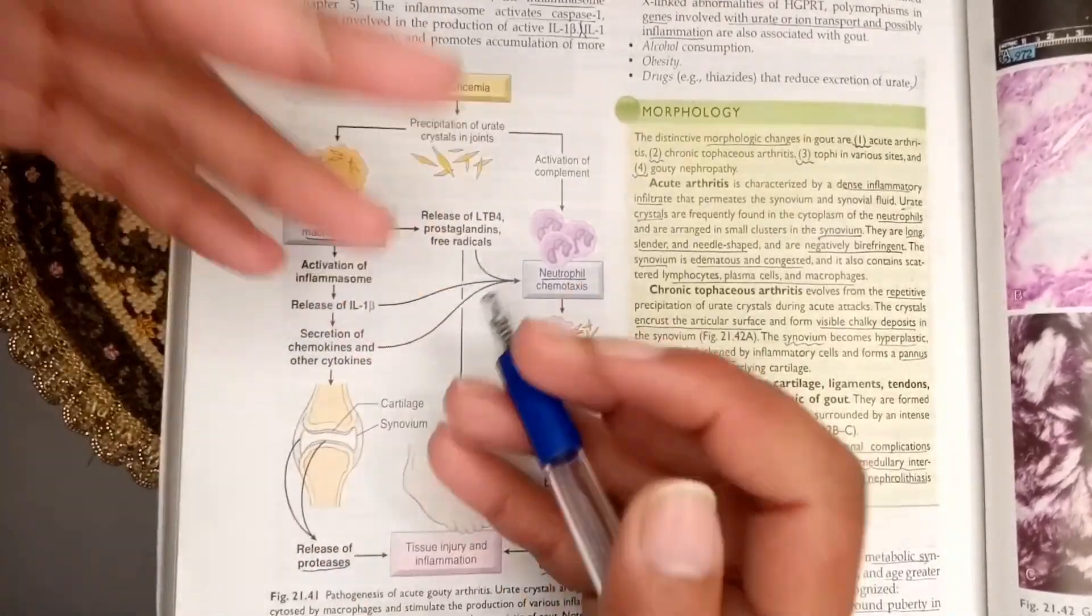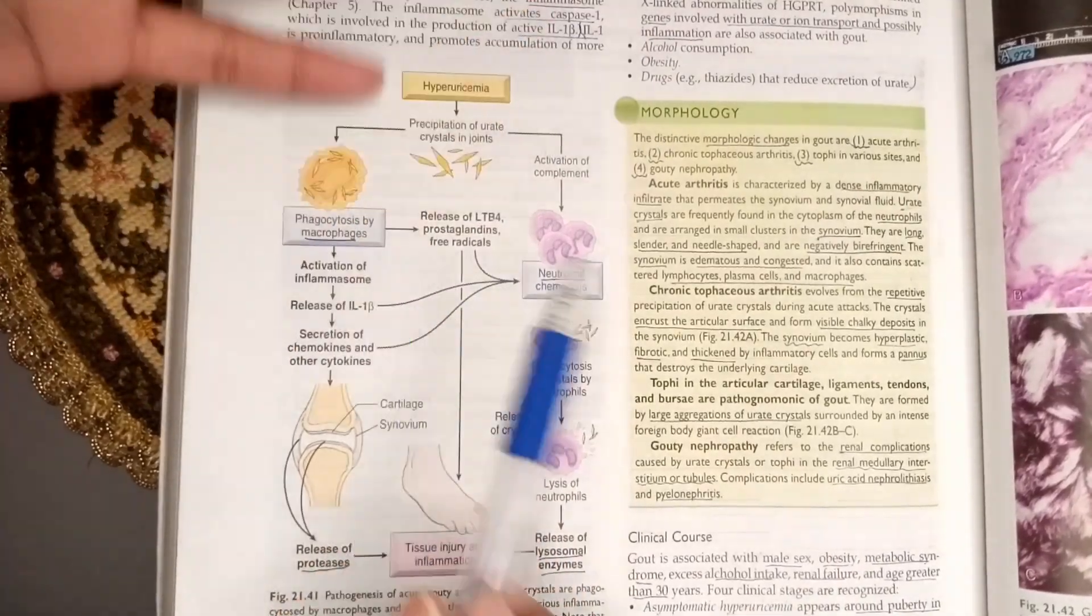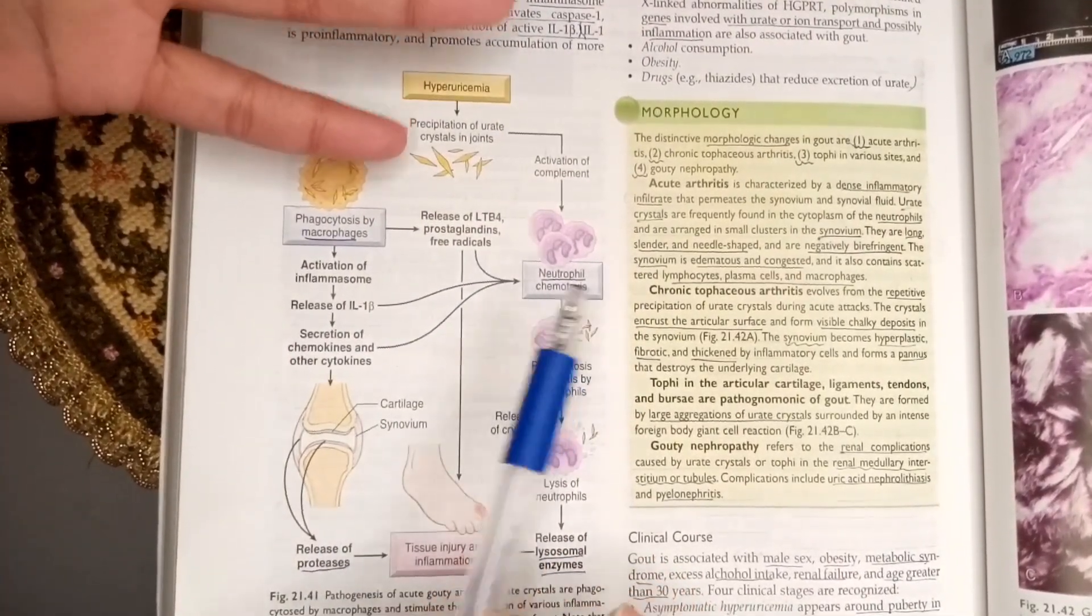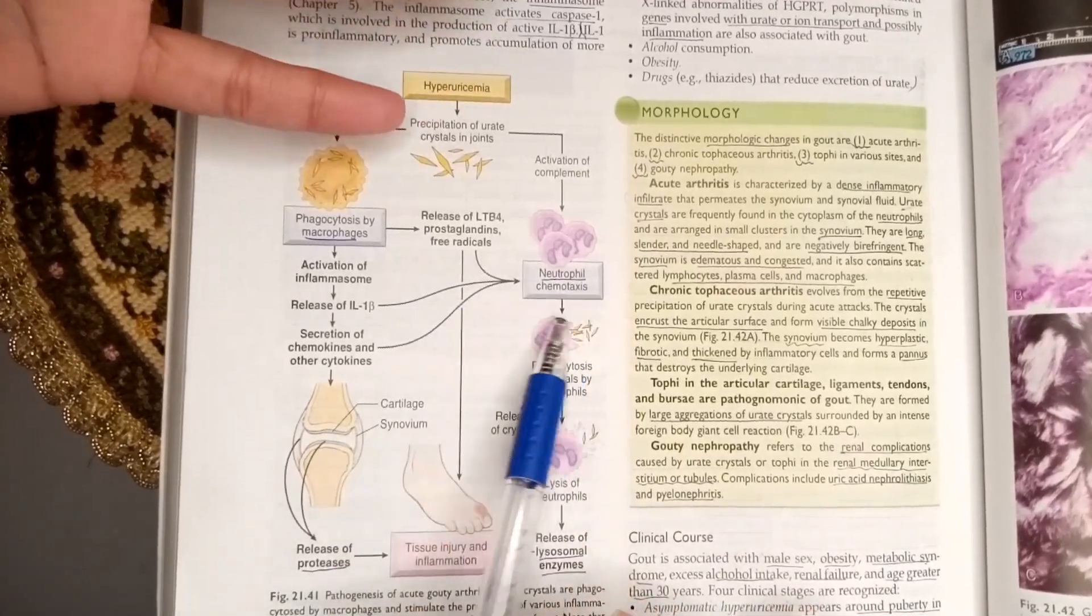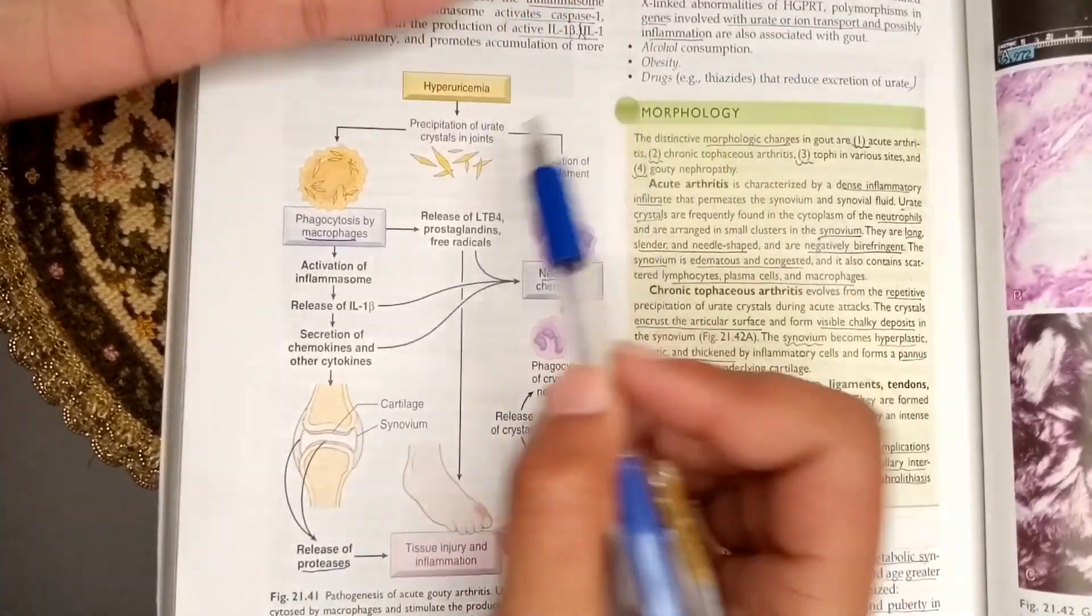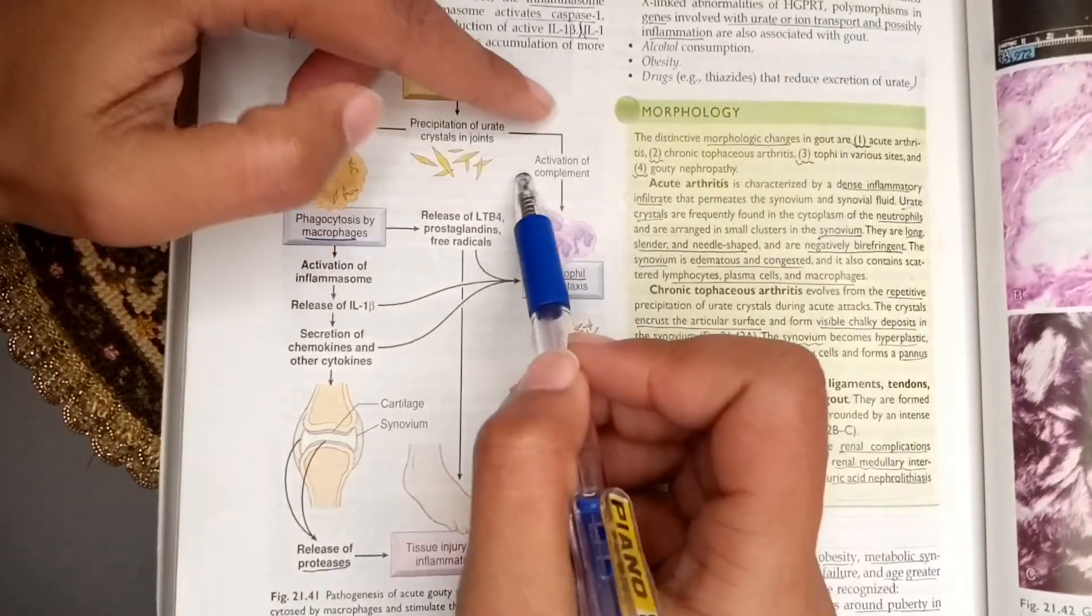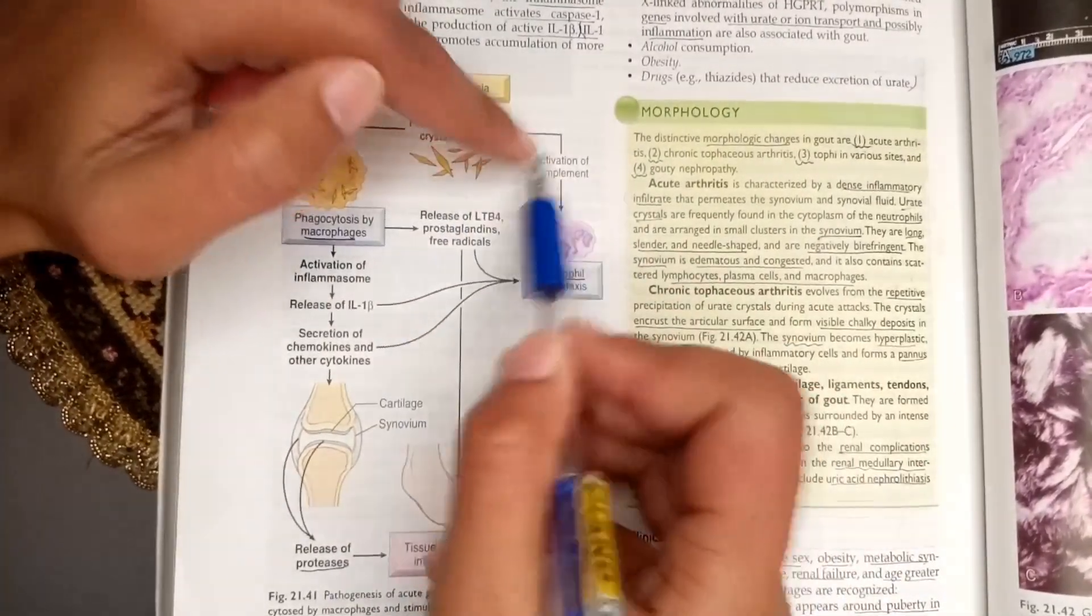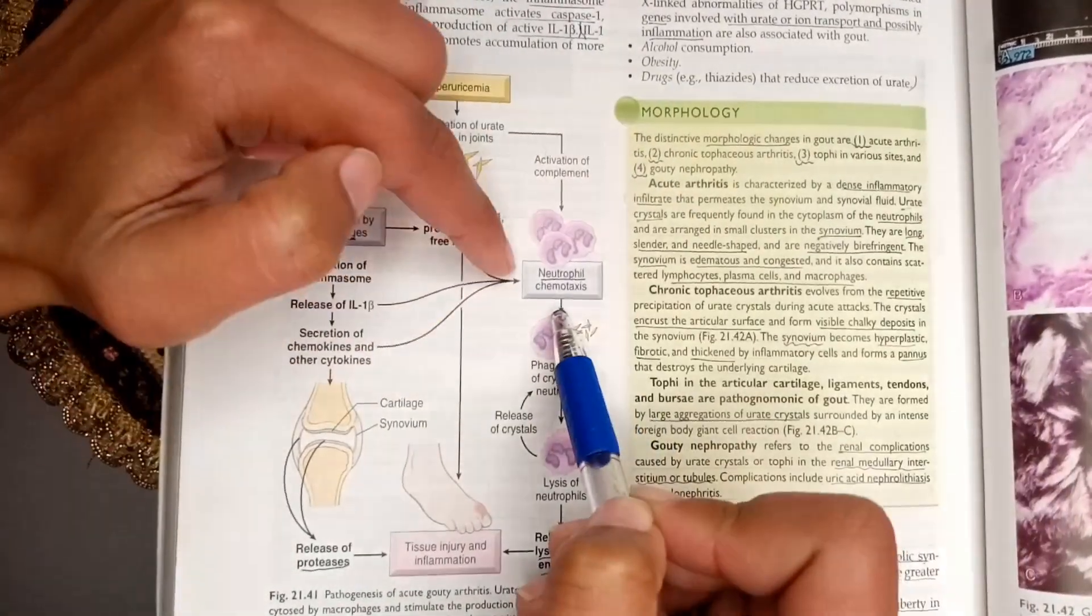This causes chemotaxis of the neutrophils. Additionally, there is complement activation from the precipitation of urate crystals, and this complement activation also causes chemotaxis of neutrophils.